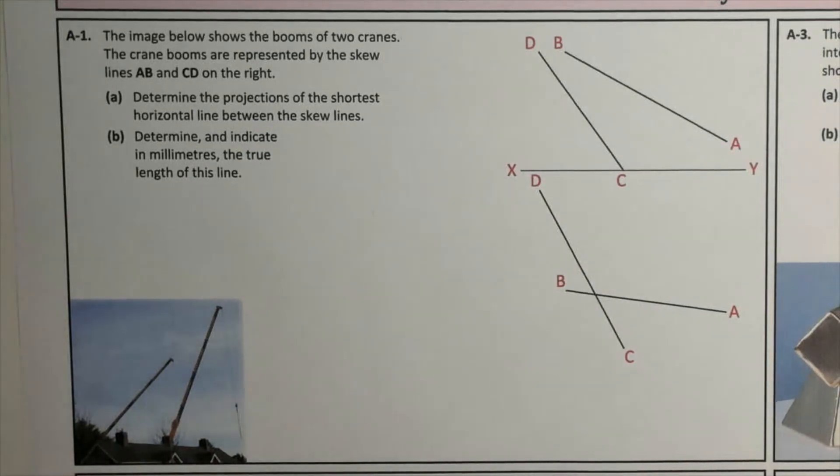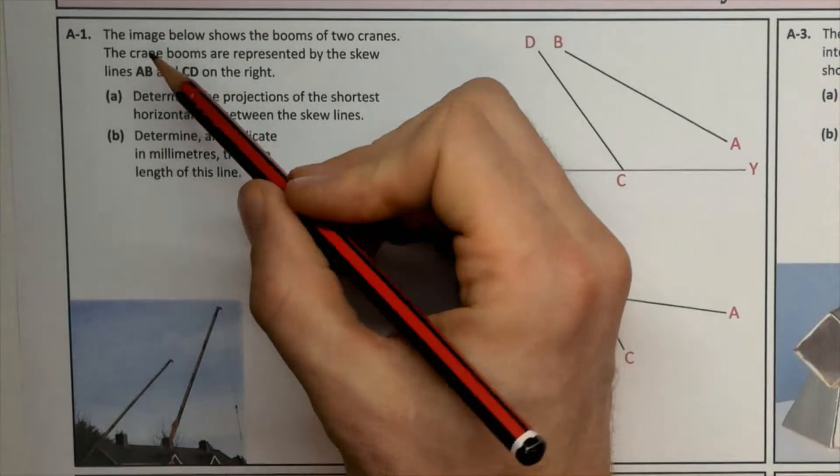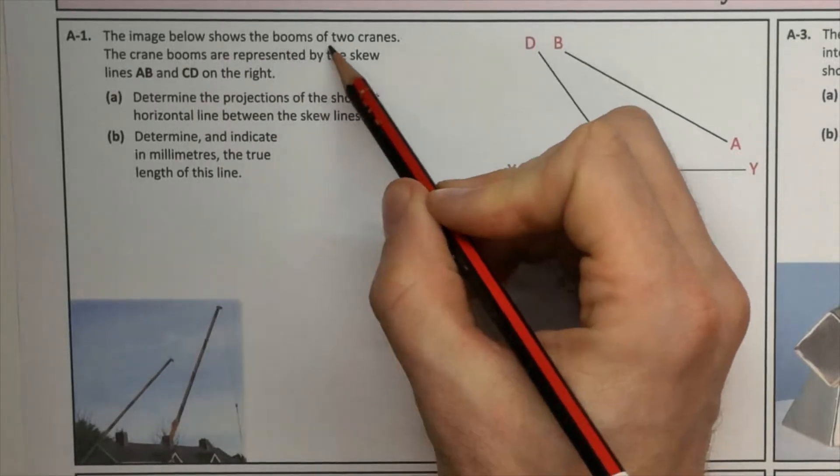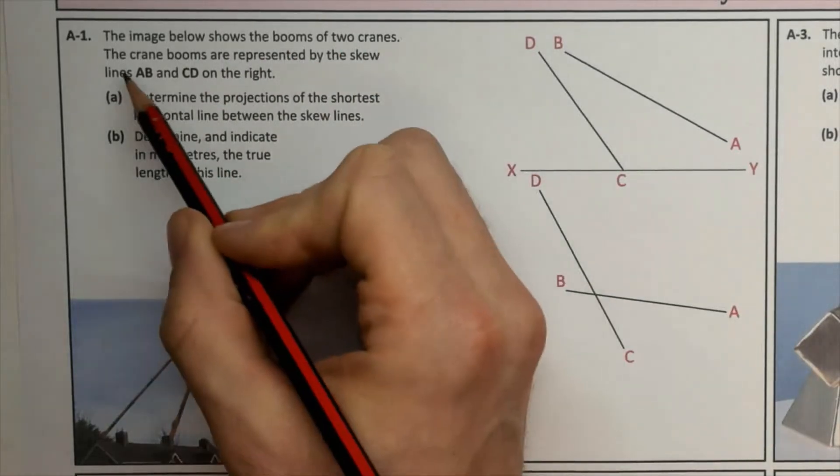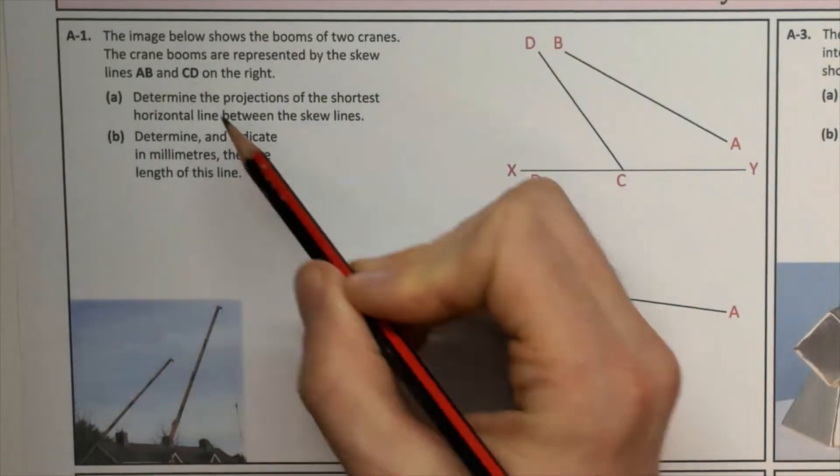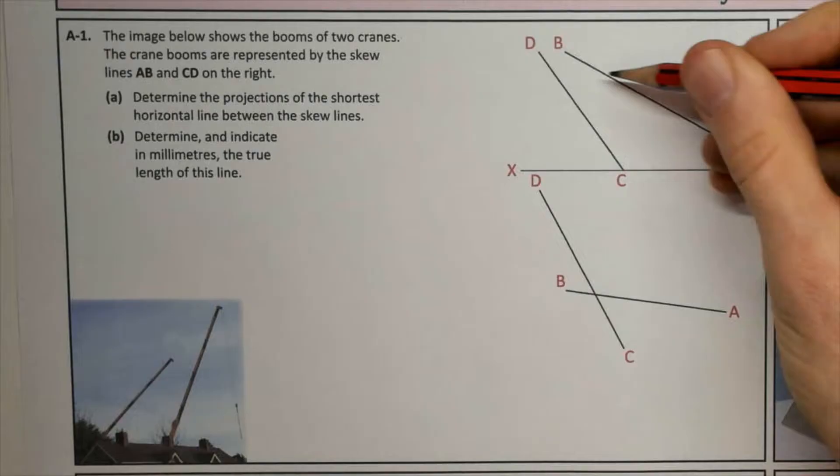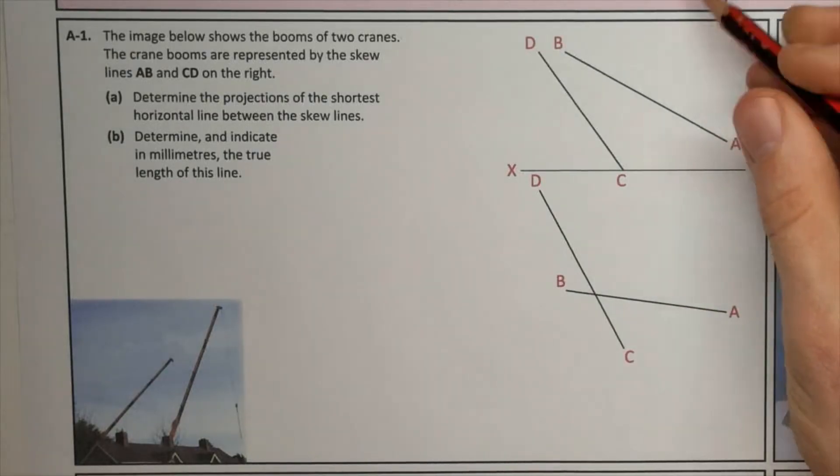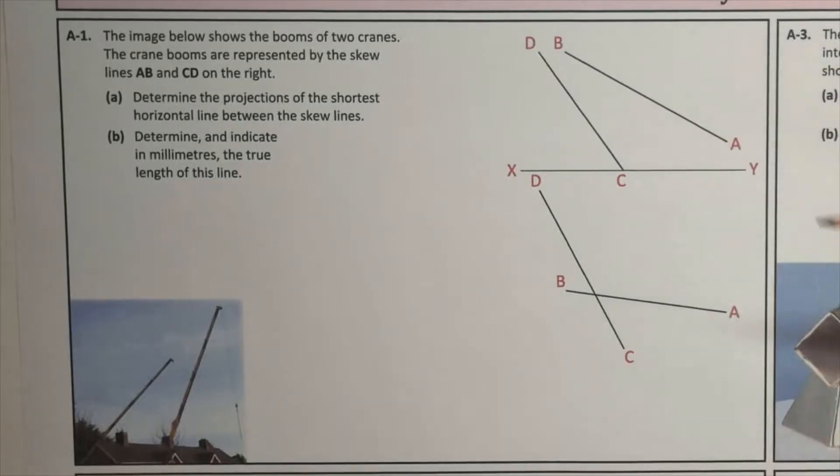Welcome to 2022 question A1. This was a skew lines question. So the image below shows the booms of two cranes. The crane booms are represented by skew lines AB and CD, and here we have them, our orthographic views and our elevation plan.